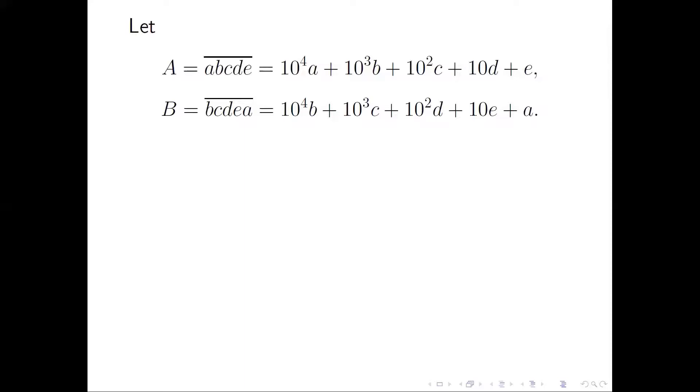The correct way is that we compare 10A and B. Then 10A equals 100000A plus 10000B and so on, minus B. This way you will see a lot of terms are cancelled out.